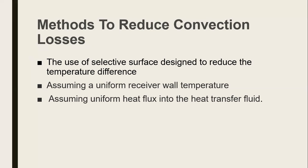Rather than assuming a uniform receiver temperature, this enables no changes of heat among the surfaces so there are no losses in other directions. The last method is assuming uniform heat flux in the heat transfer fluid. These are some of the methods to reduce convection losses.